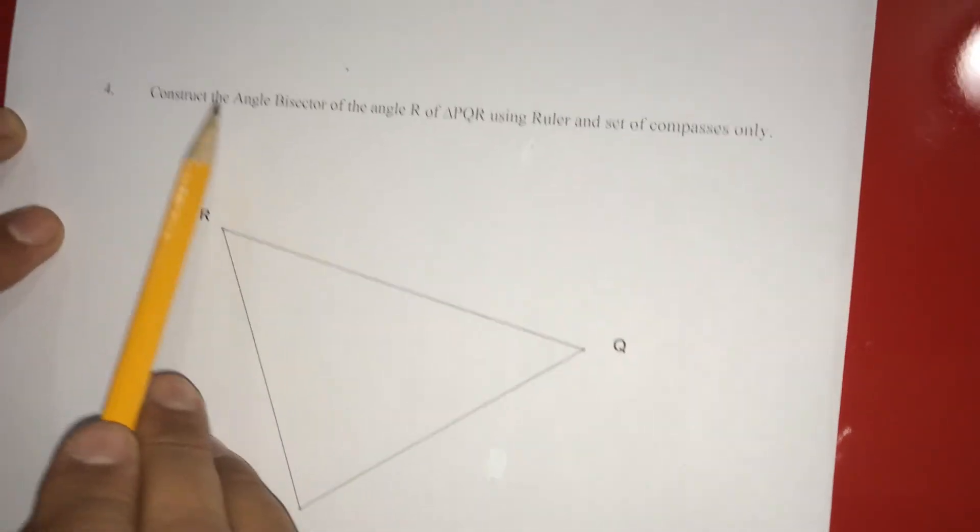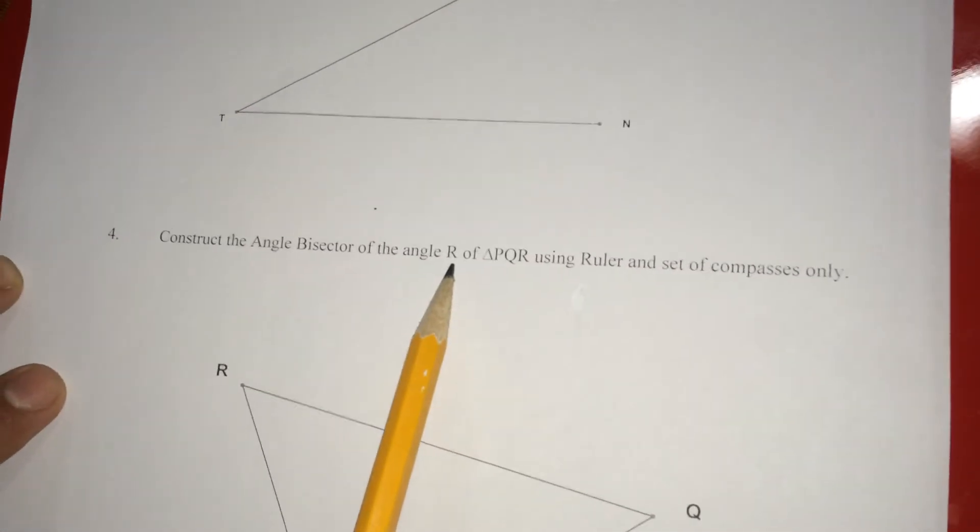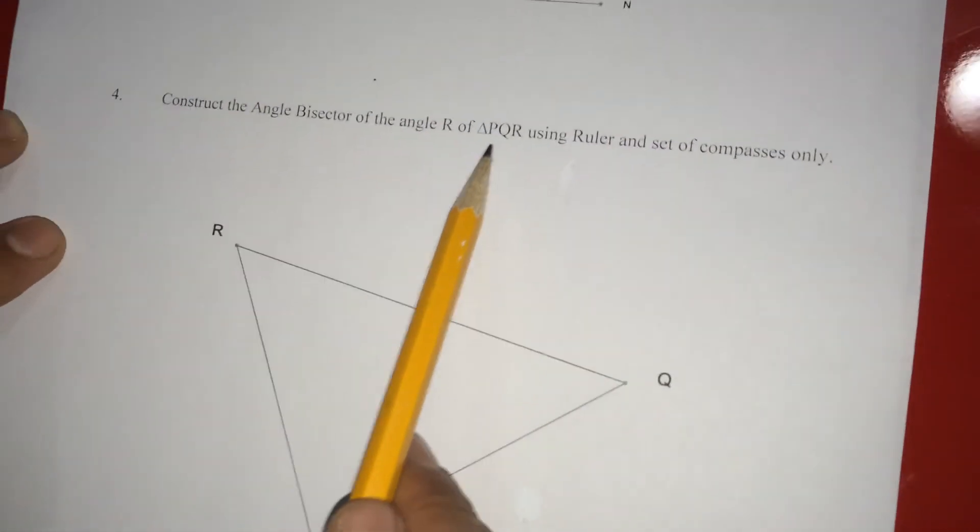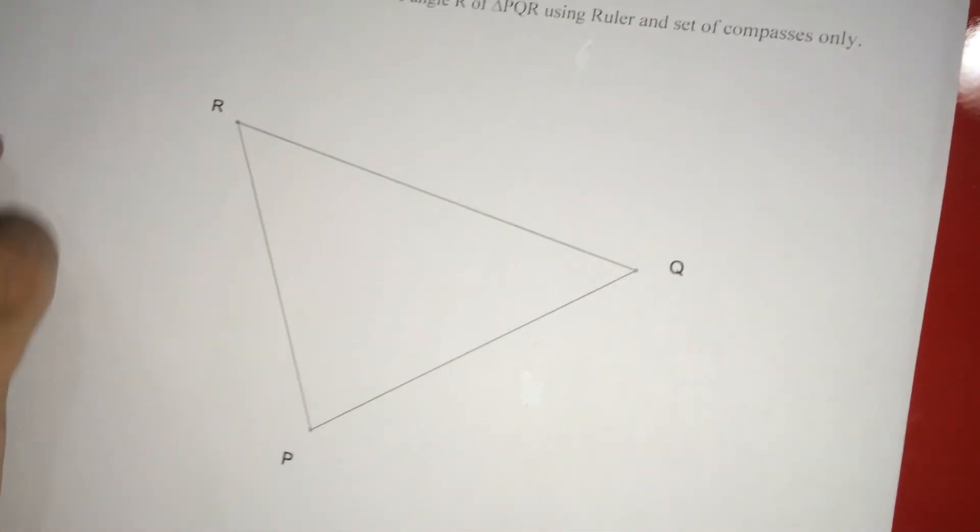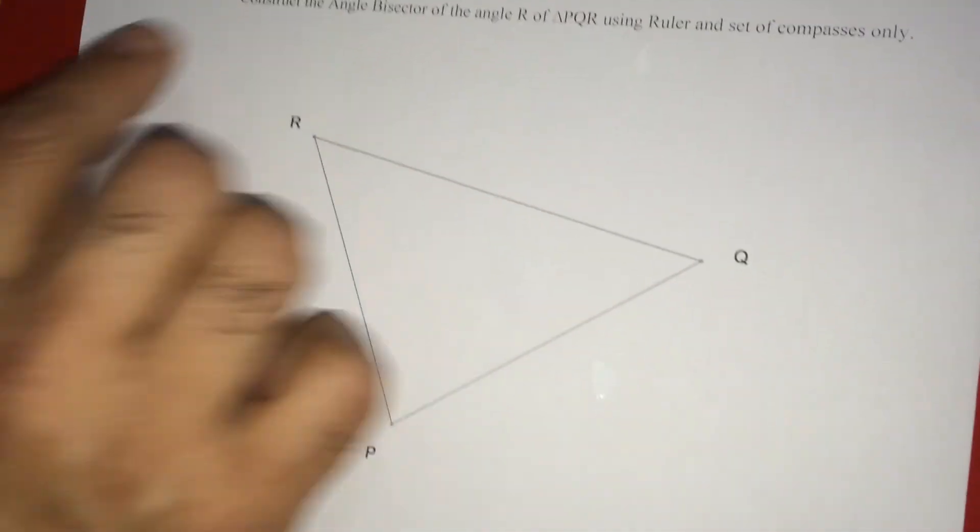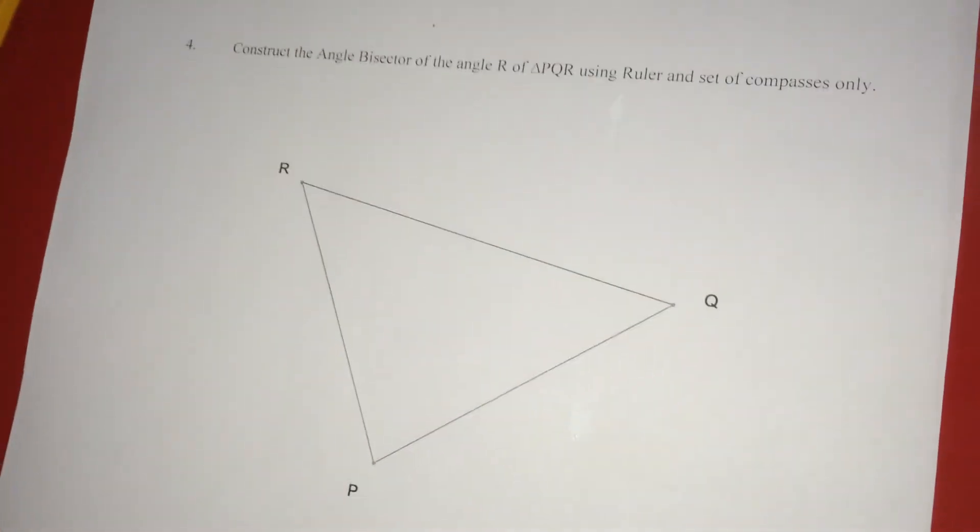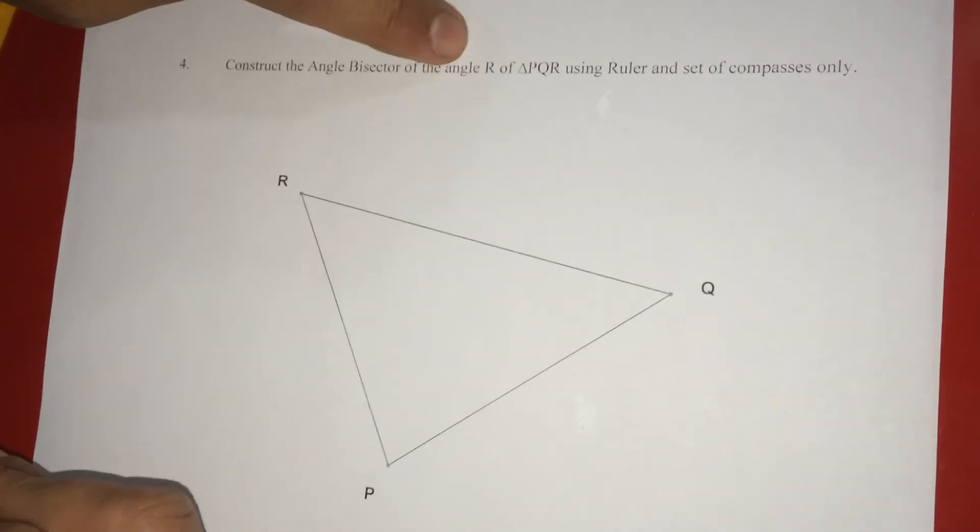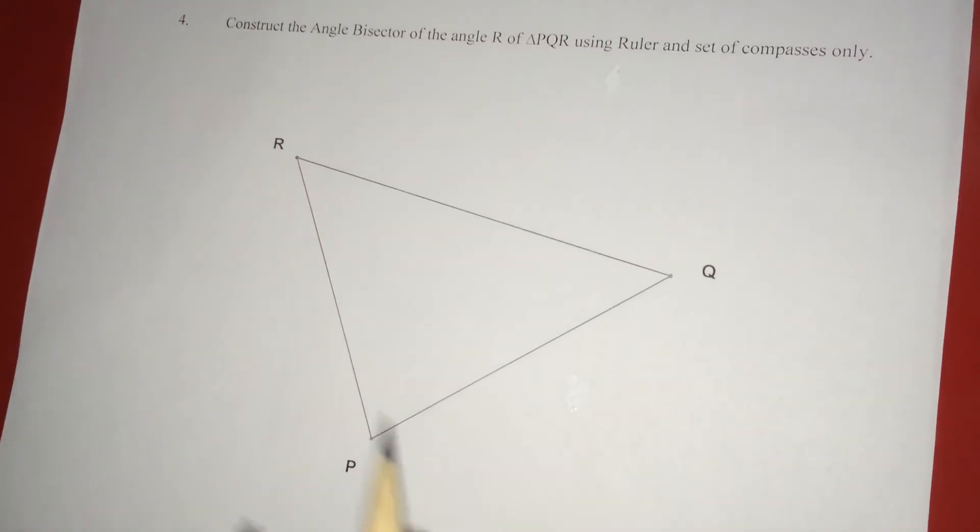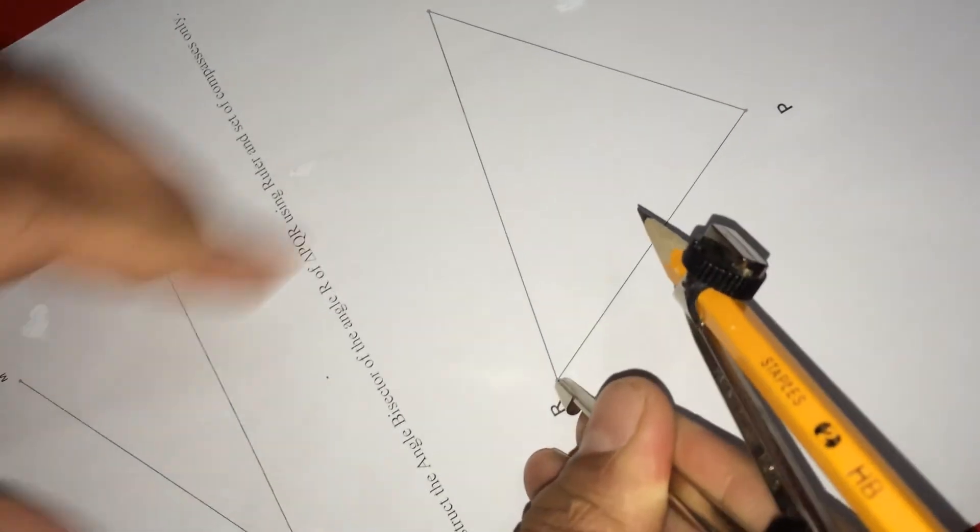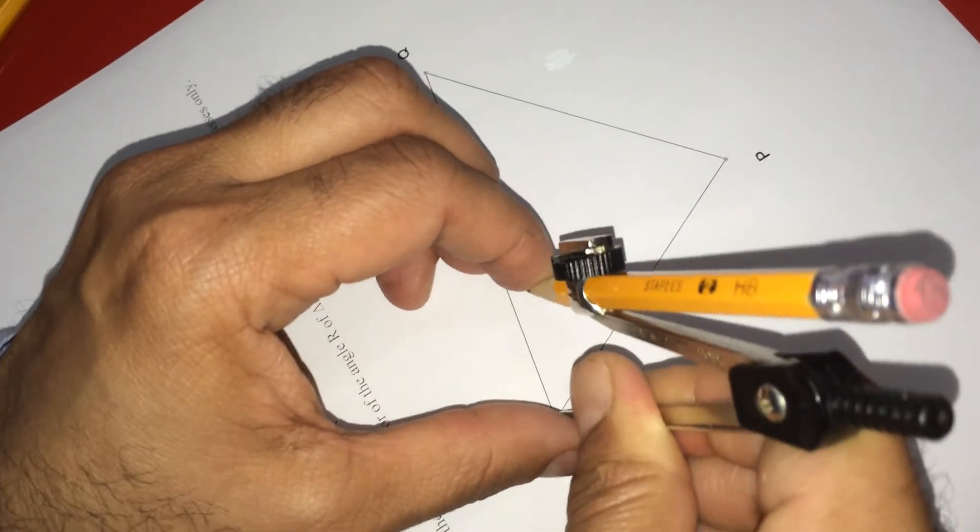And also here, if you see the fourth one, construct the angle bisector of the angle R, that means this angle, of triangle PQR using ruler and set of compasses only. So I am going to do for you number four. What I do, since he is asking to construct the angle bisector of angle R, I have to take this R as center and I draw an arc like this.